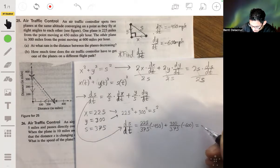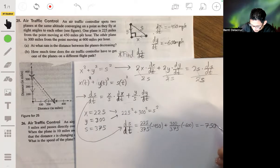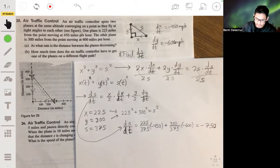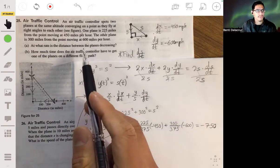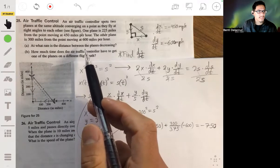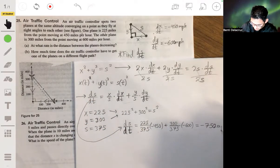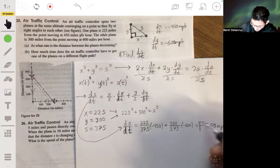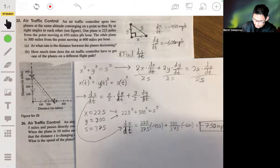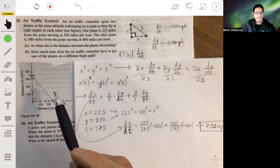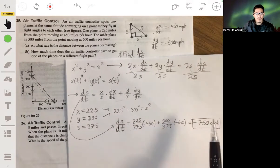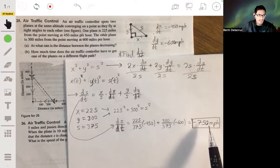Multiplying that all out and combining, we'll get negative 750. And we're talking about the rate of change in distance, which we're still in miles per hour. So the distance between the two planes is decreasing at a rate of 750 miles per hour.